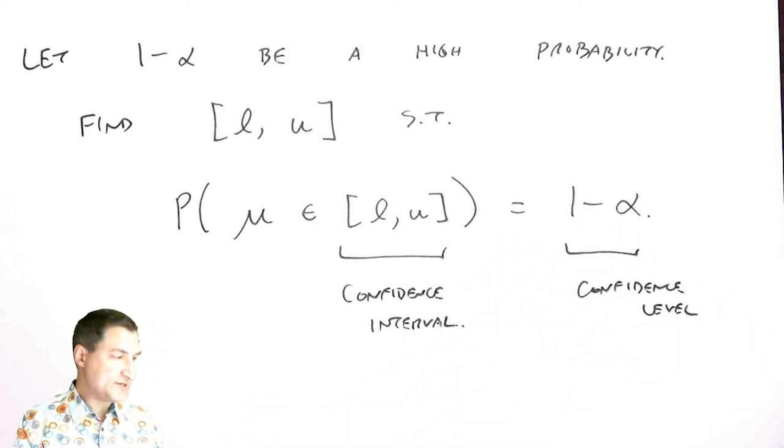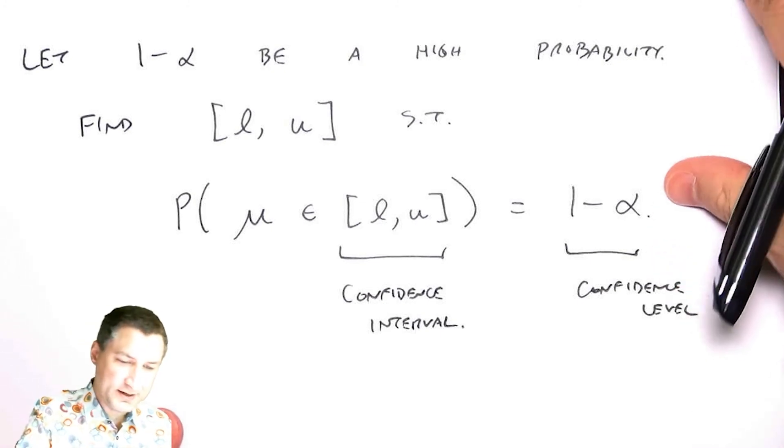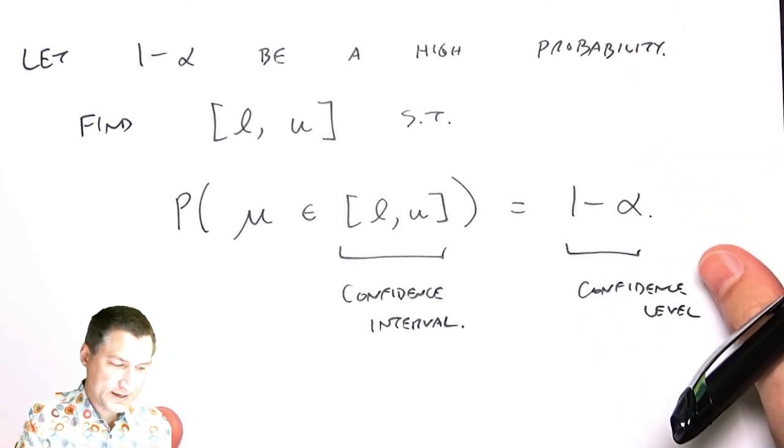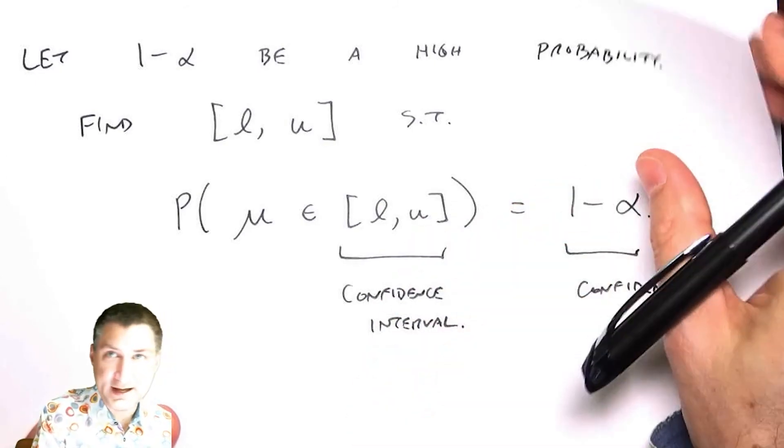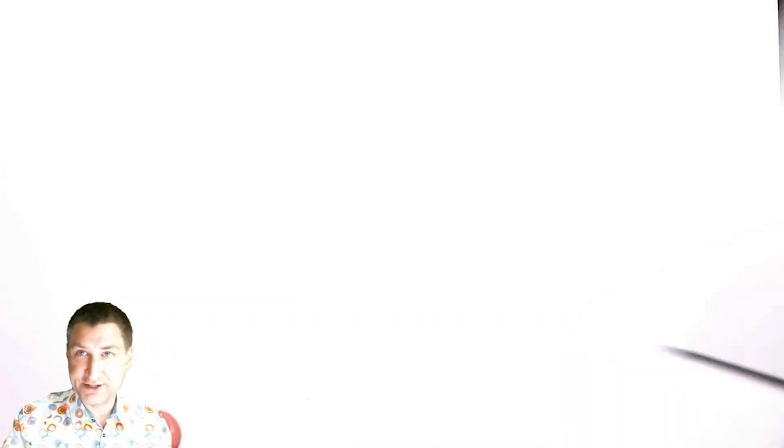The idea comes from the central limit theorem, where we know that in the limit things are Gaussian. These L and U depend on averaging of draws from the same PDF.